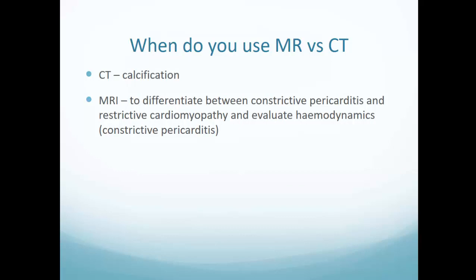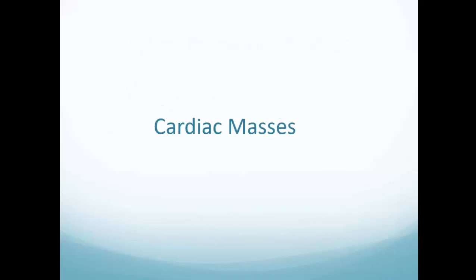CT is excellent for detecting calcification with certainty. MR is more for the physiology — assessing constrictive pericarditis, looking for early diastolic flattening or reversal of the interventricular septum. CT can be used for physiological assessment if you have a full RR interval, but we've moved away from that, so CT is now really used for morphological assessment of the pericardium.